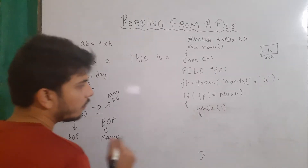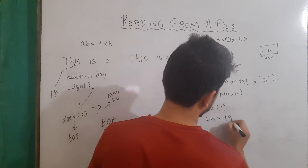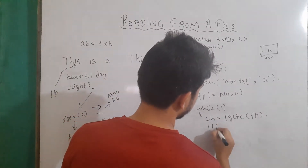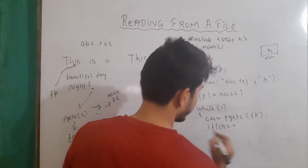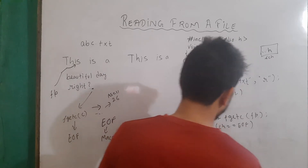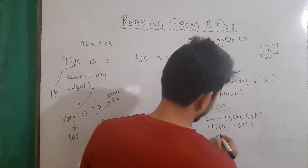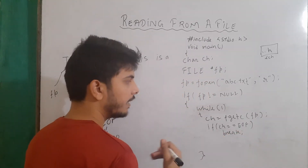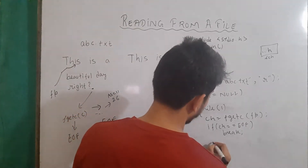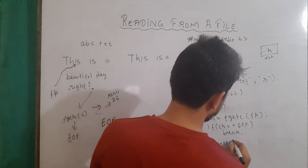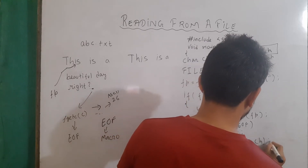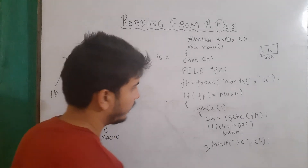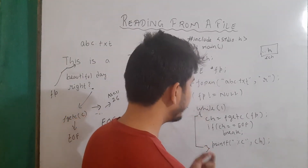So now, first we take the input in ch like this: ch equals fgetc(fp). After that, we check if ch equals EOF. If it is equal to EOF, then we break this loop. If it is not equal to EOF, then we let it run and write printf %c and then ch. So now this is a working program to read the entire content of a file. This is the body for the while infinite loop.